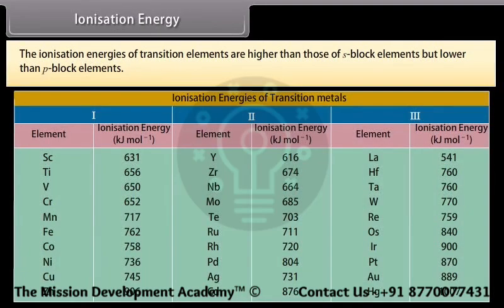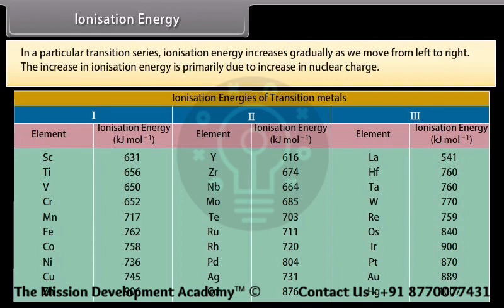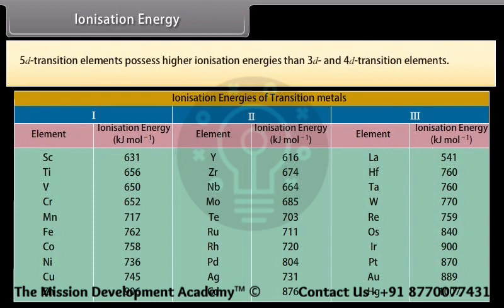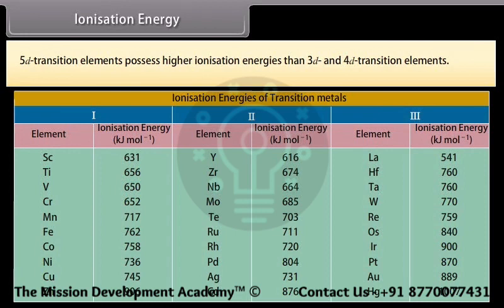The ionization energies of transition elements are higher than those of S-block elements but lower than P-block elements. In a particular transition series, ionization energy increases gradually as we move from left to right, primarily due to increase in nuclear charge. 5D transition elements possess higher ionization energies than 3D and 4D transition elements. This is due to the greater effective nuclear charge because of the ineffective shielding of the nucleus by 4F electrons.